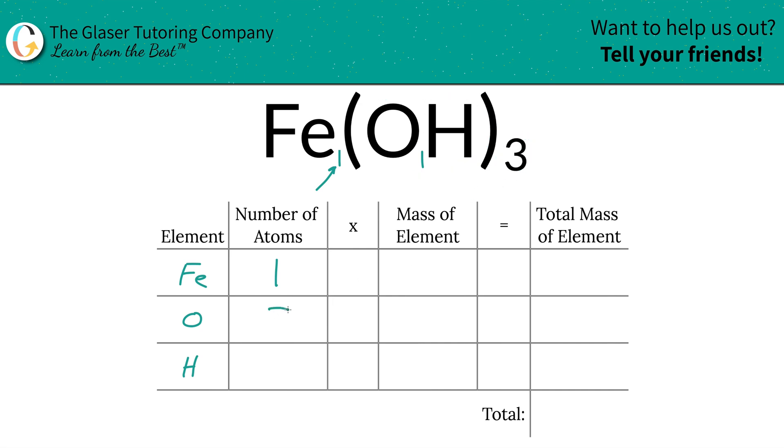Therefore you have three oxygens. The other way to look at it is to take the inner subscript, multiply by the outer subscript to find the total of that particular atom. Same thing for hydrogen: you got one hydrogen, you multiply by the outer subscript three, and so you have three hydrogens. Easy peasy, right?